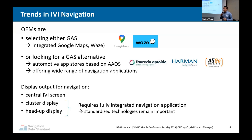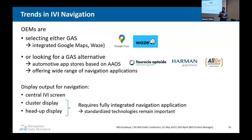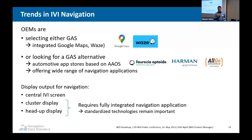If OEMs don't want to go with Google but their customers want the same look and feel, Android Automotive OS enables automotive app stores — these are the three main players on the market. Customers can offer navigation applications through these app stores. However, when it comes to multiple display outputs — central IVI screen, cluster display, and head-up display — it may require a fully integrated navigation application where navigation technology remains important.